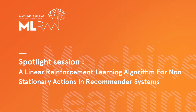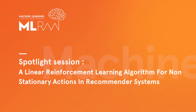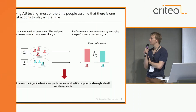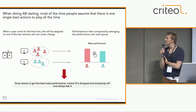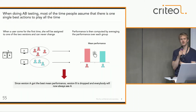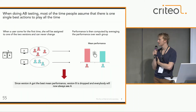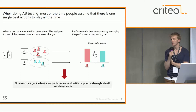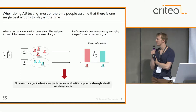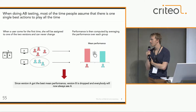I'm going to quickly introduce a work called 'Linear Reinforcement Learning Algorithm for Non-Stationary Actions in a Recommender System.' When we do A/B testing, most of the time we assume that there is one single action that is the best, and we have to find this action in order to play it all the time.